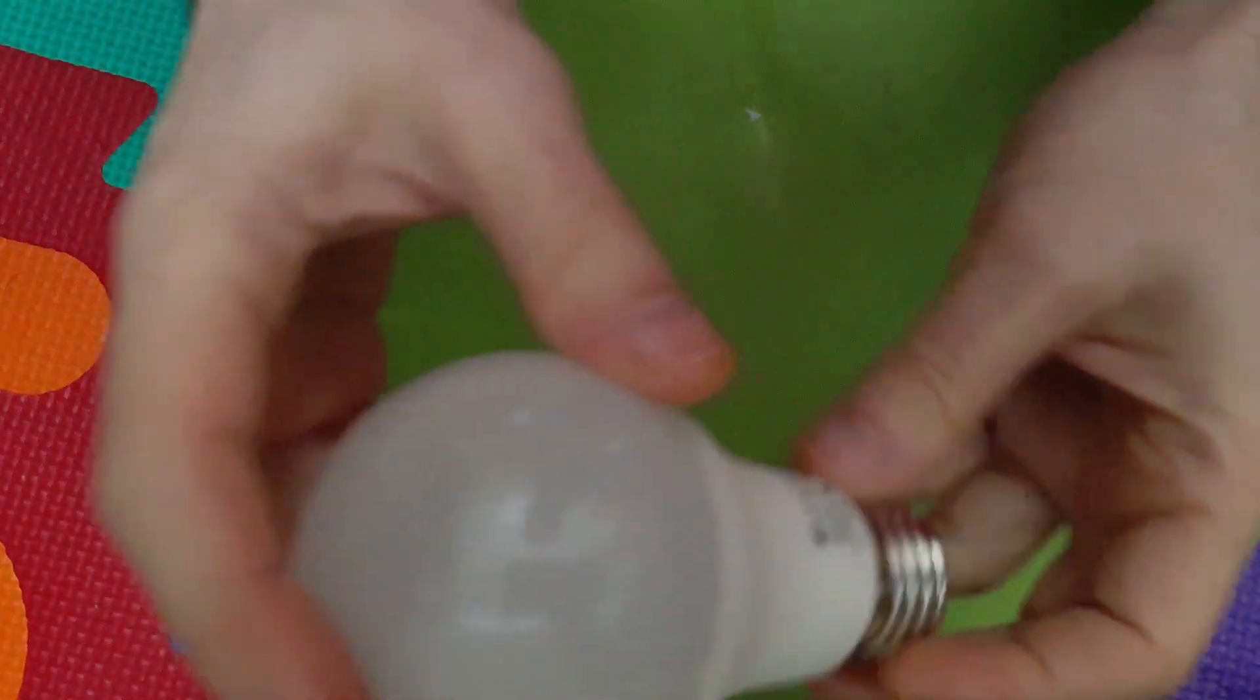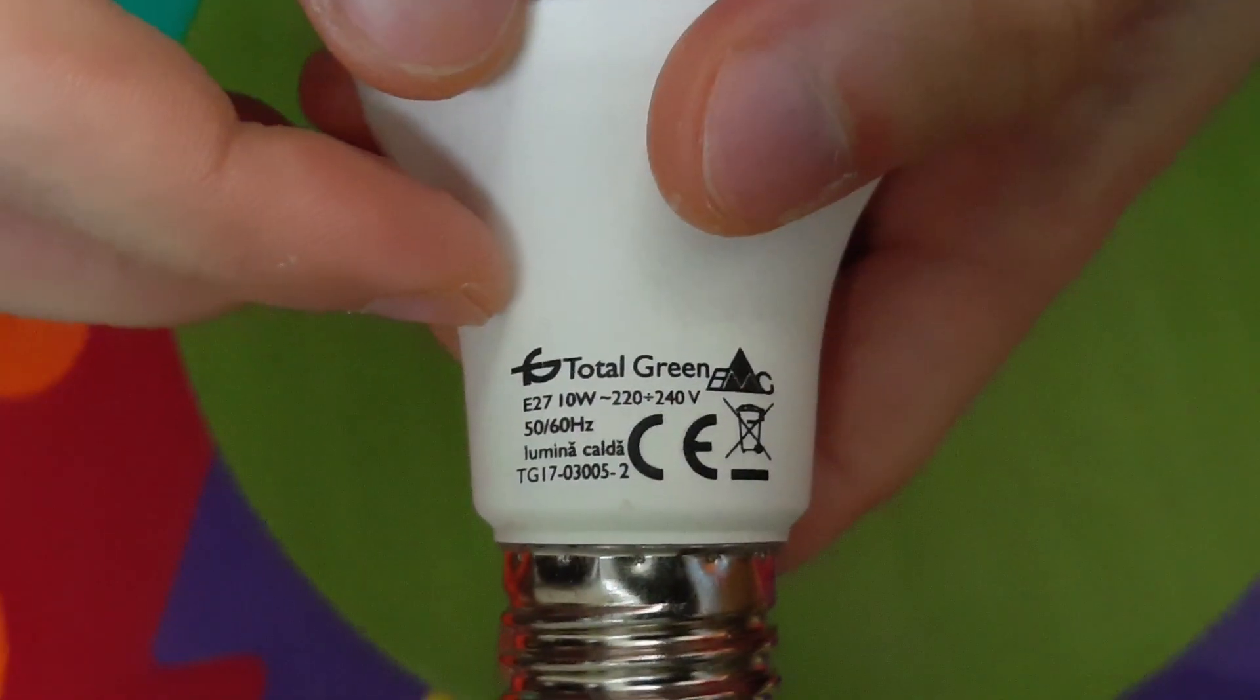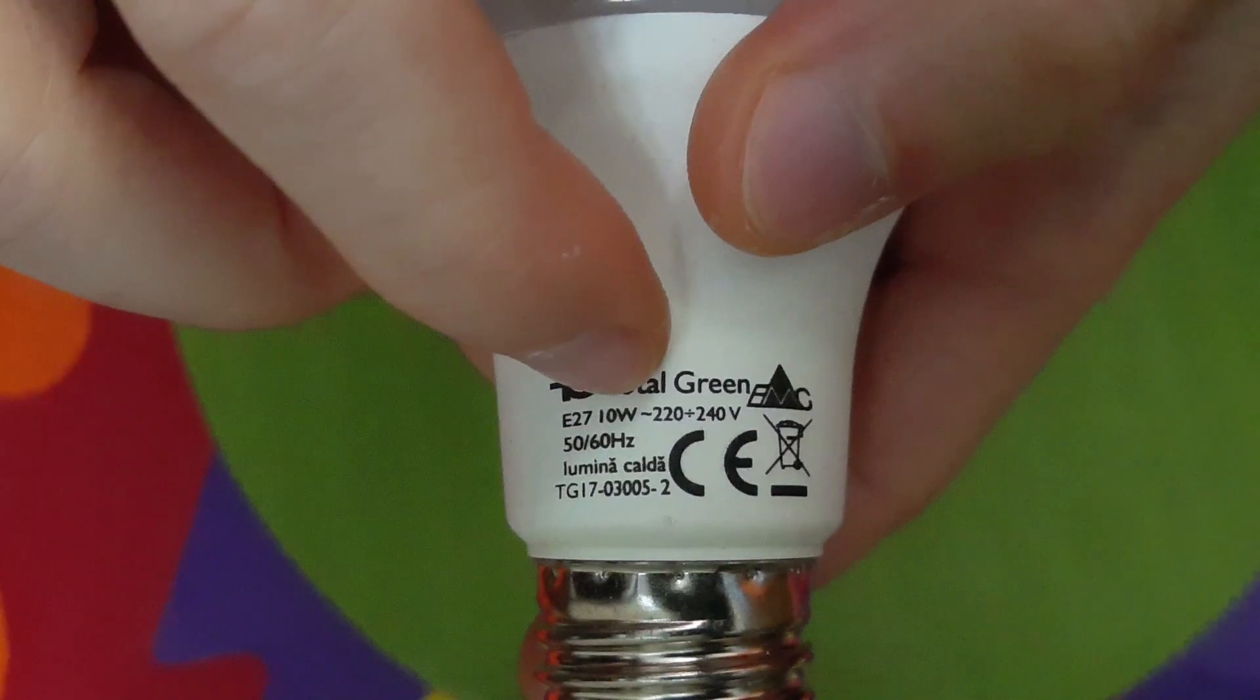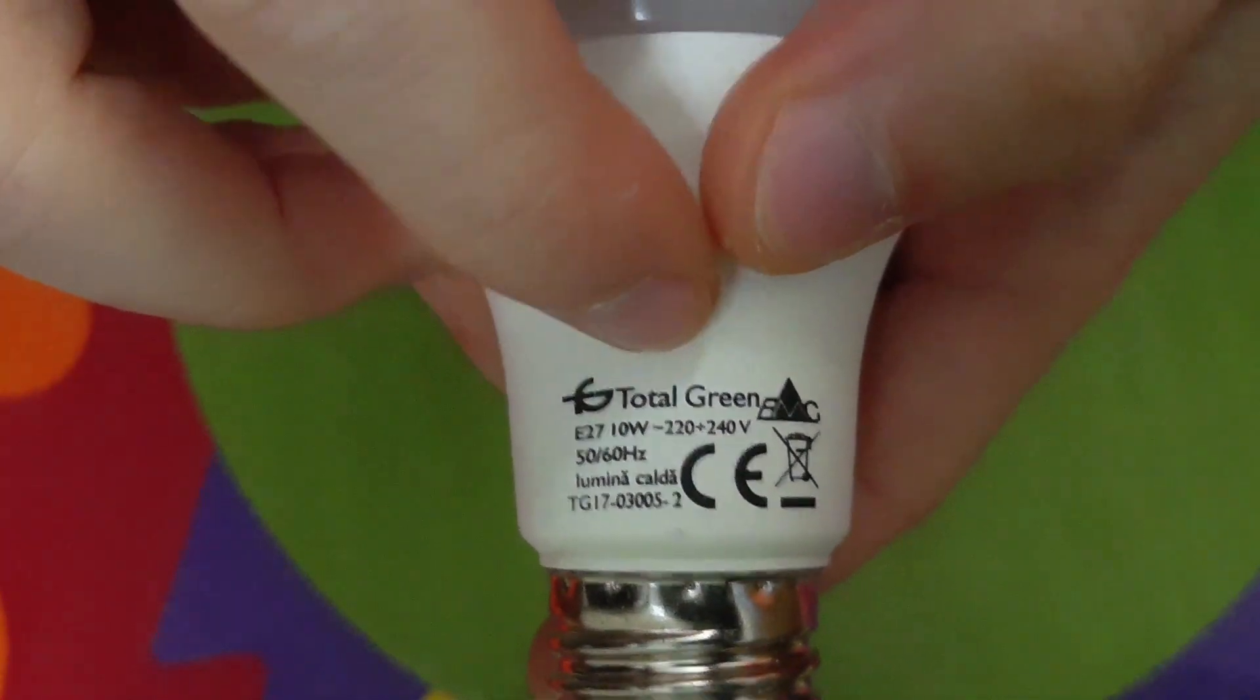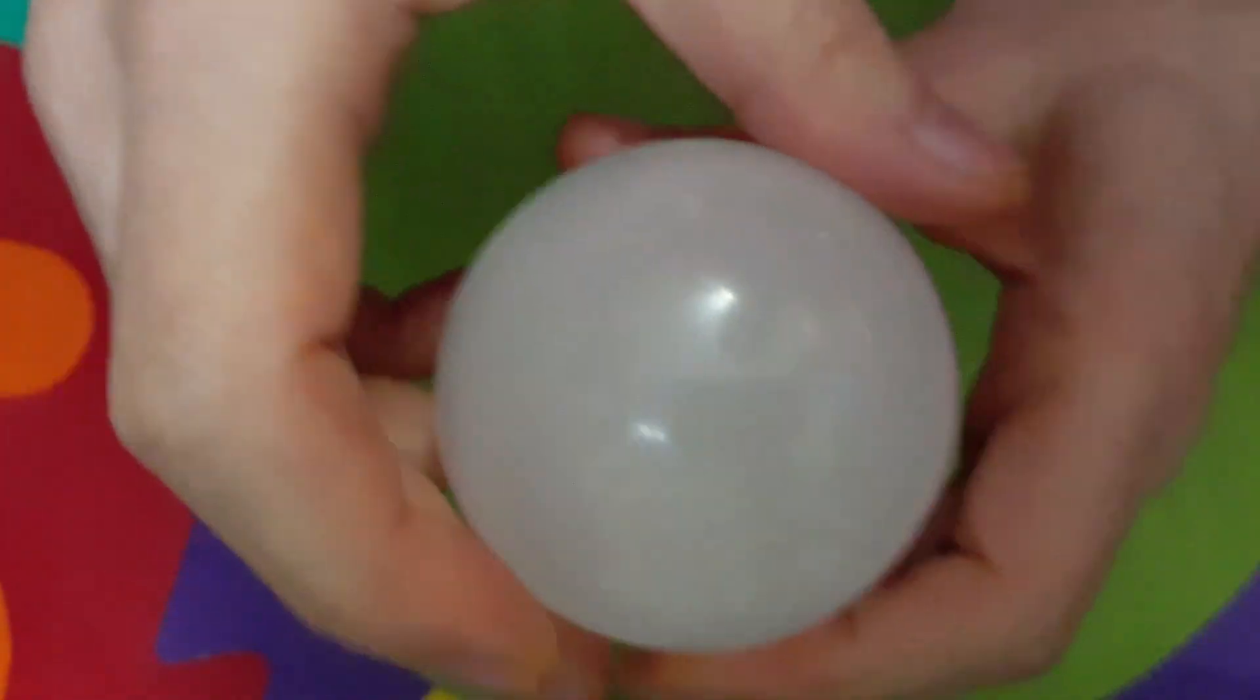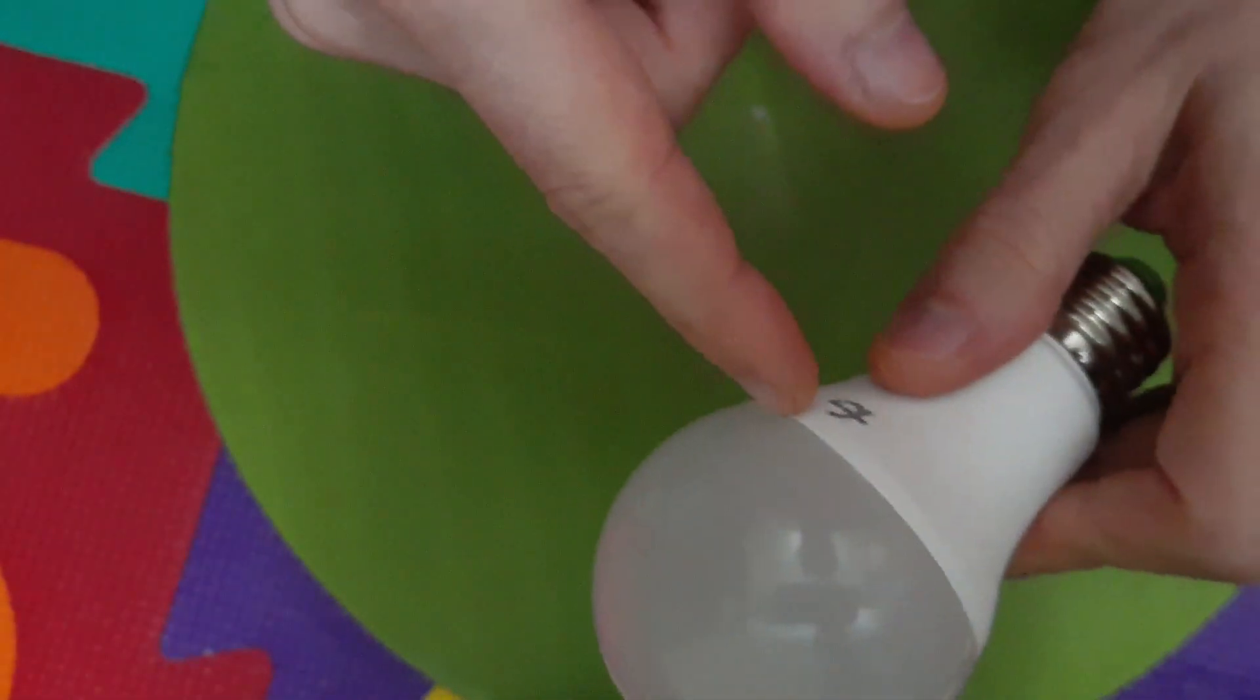Hi, so I have this LED bulb. It's a 10-watt LED bulb that stopped working. So how do you fix this? First, you have to remove this part. You just put a screwdriver here.